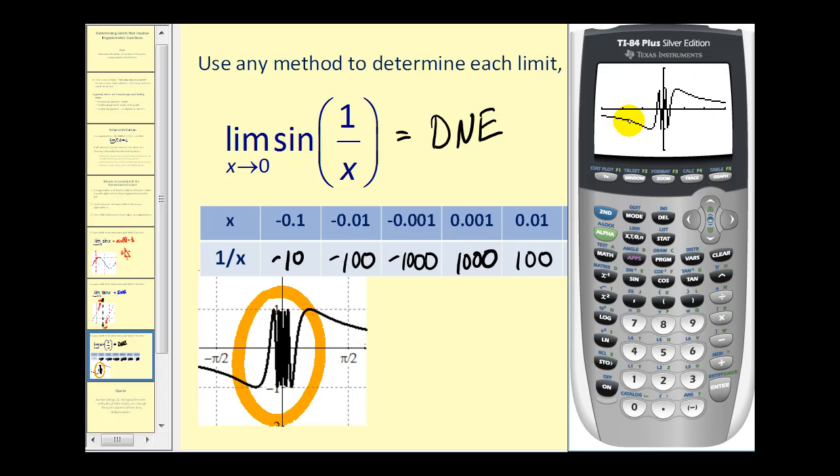Let's zoom in on this and see what we can discover. Press zoom, option two, and then enter. Again, you can see as we're approaching zero, this function is alternating between negative one and positive one.